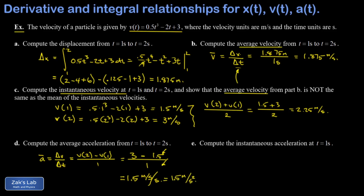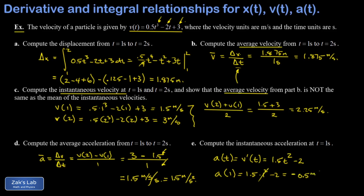In the final part, we compute the instantaneous acceleration at t equals one second using the time derivative of v. Applying the power rule: 0.5t³ differentiates to 1.5t², negative 2t differentiates to negative 2, and the constant vanishes. Evaluating at t equals one: 1.5 times one squared minus two gives negative 0.5 meters per second squared.